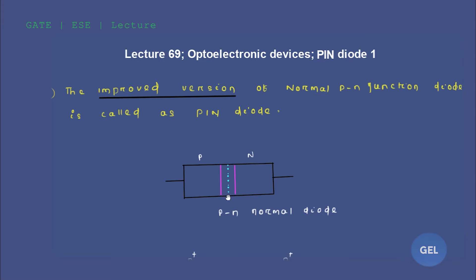Now, what is a PIN diode? We always start with an intrinsic semiconductor and begin doping from one side to form a p-region using acceptor impurity. After that junction point, we dope from the other side using donor impurity to form the n-type side. After the formation of p-type and n-type, the depletion layer forms — this is how we form a normal p-n diode.